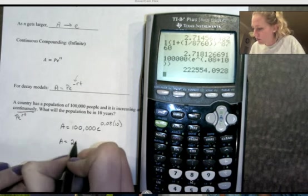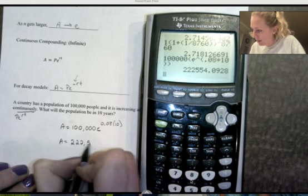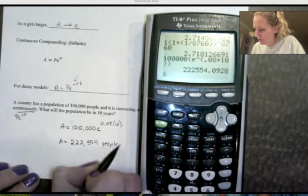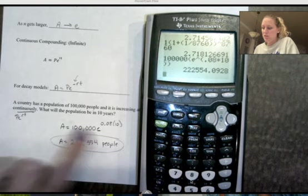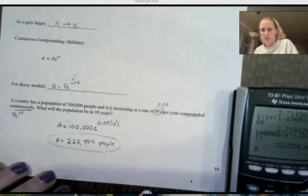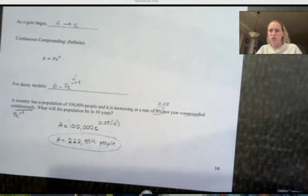And it's population, so I'm talking about people, so I do want to round to the nearest whole number. So that's our population if it were to continue at that 8% rate, compounded continuously for 10 years. That's all for this video. Thanks for watching.